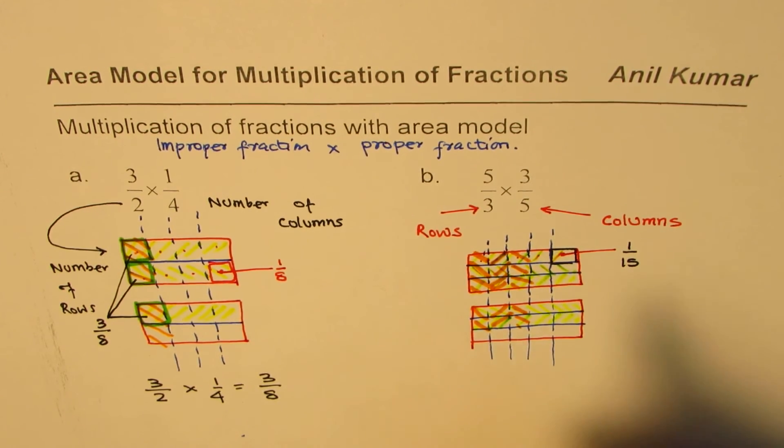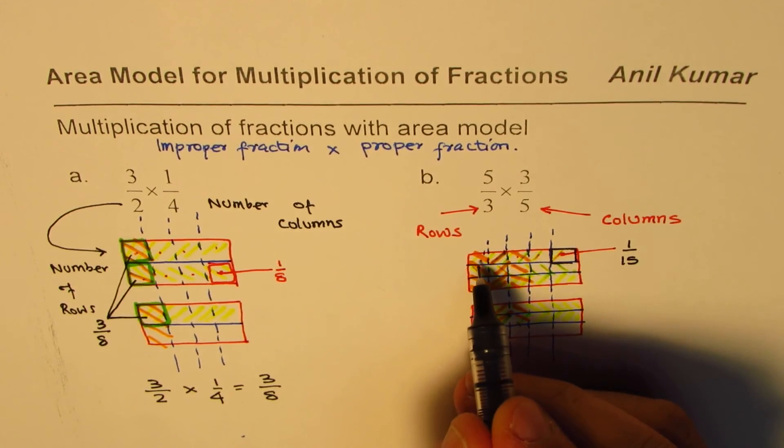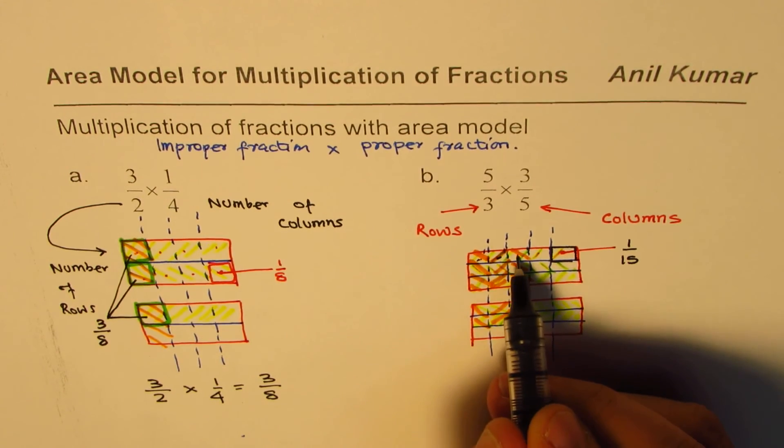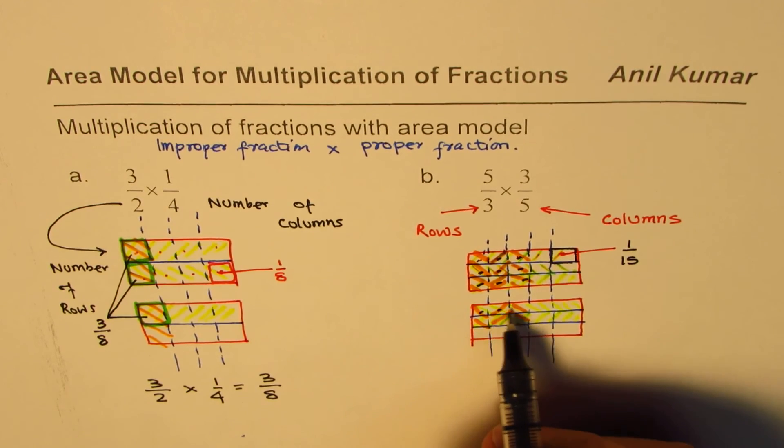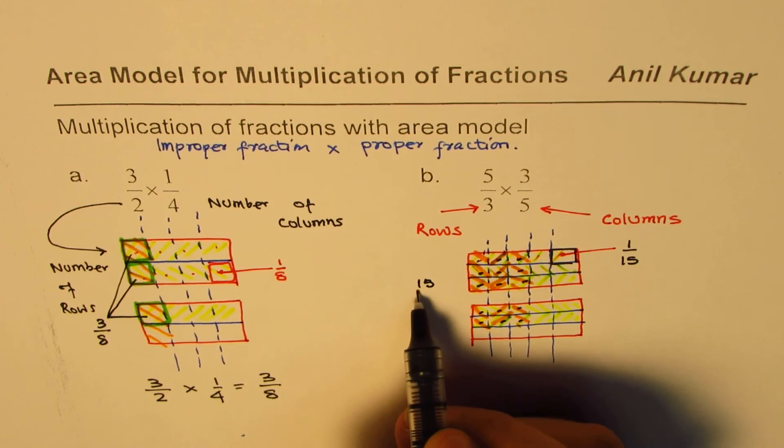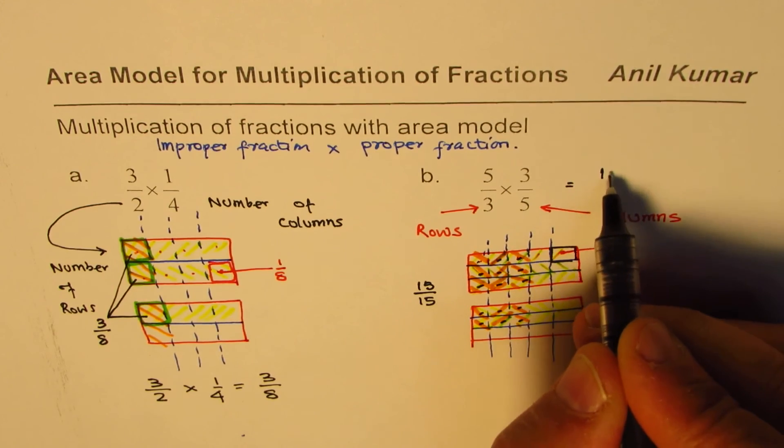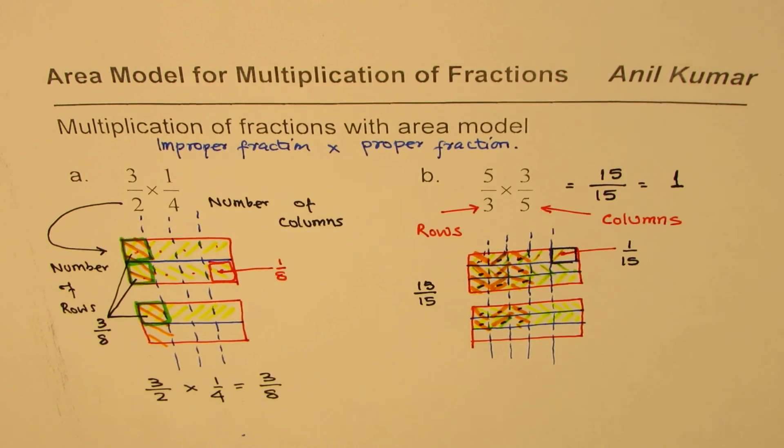We need to count how many are these. Each is 15th. So each is 15th. So these common portions are 1, 2, 3, 4, 5, 6, 7, 8, 9, 10, 11, 12, 13, 14, 15. So these are 15, and each one is 1 fifteenth.